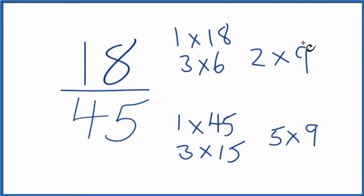So we're looking for the greatest common factor between 18 and 45. And it looks like the greatest factor is 9. So if we divide 18 by 9 and 45 by 9, we'll have simplified 18 over 45.